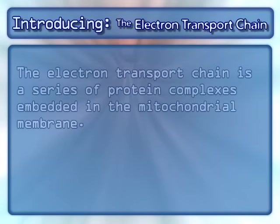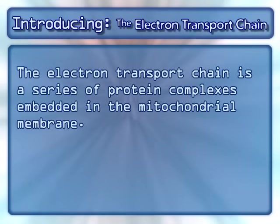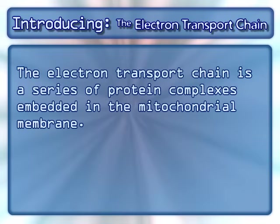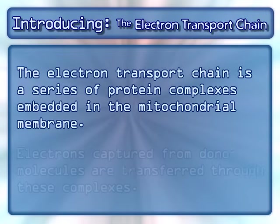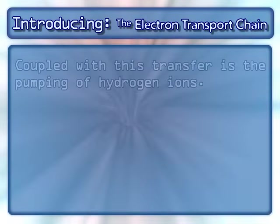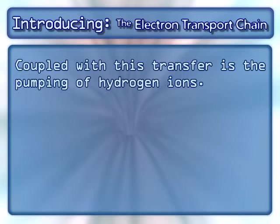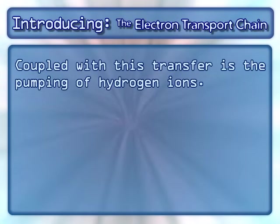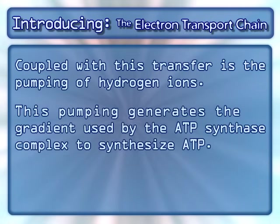The electron transport chain is a series of protein complexes embedded in the mitochondrial membrane. Electrons captured from donor molecules are transferred through these complexes. Coupled with this transfer is the pumping of hydrogen ions, which generates the gradient used by the ATP synthase complex to synthesize ATP.